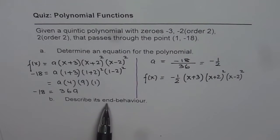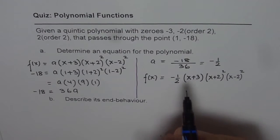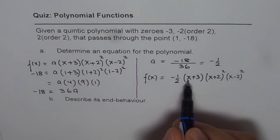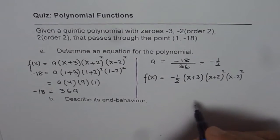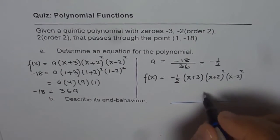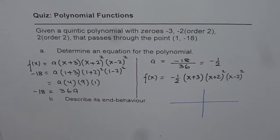Part B is describe its end behavior. Now as you can see, the leading coefficient is going to be negative. When you multiply all these x's, it will be x to the power of 5 with the leading coefficient of minus half. Now since the leading coefficient is minus half, we know the end behavior.